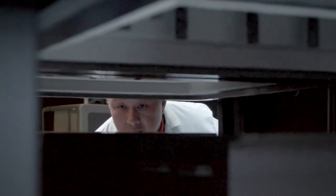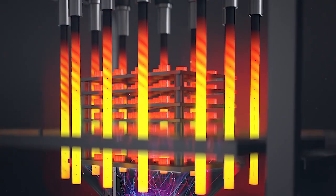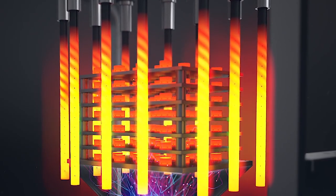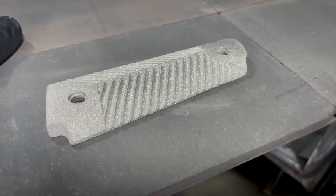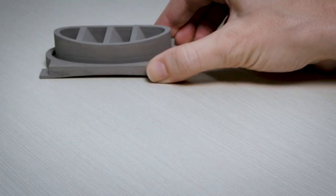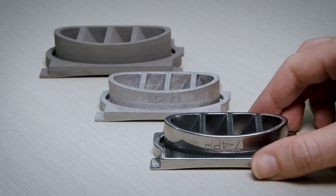During sintering, the green parts are heated in a furnace to temperatures approaching the melting point of their metal alloy. The metal particles fuse together to form a solid mass. During this process, green parts will shrink up to 20% depending on their material.